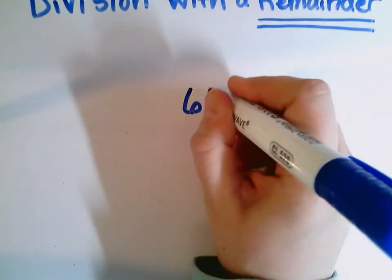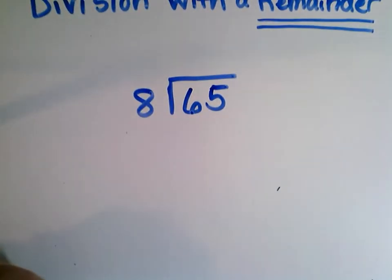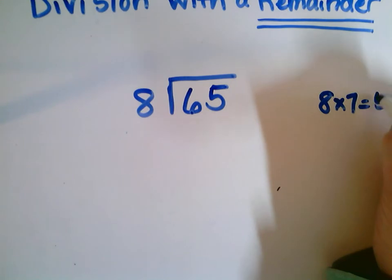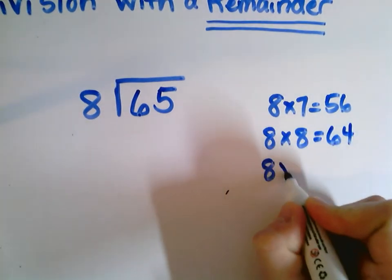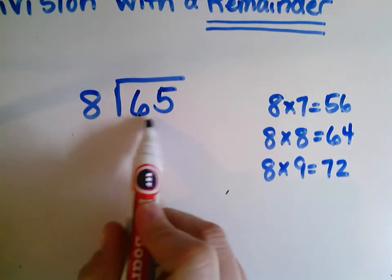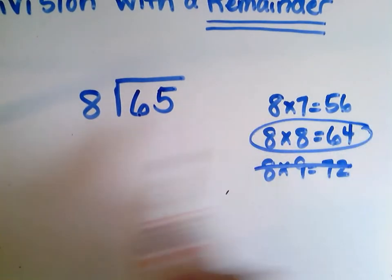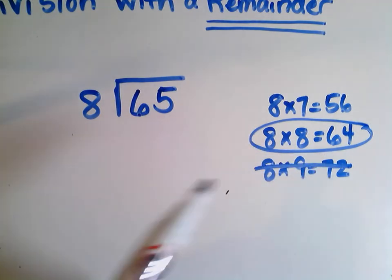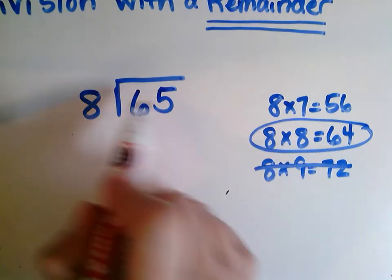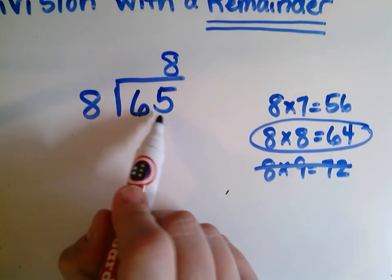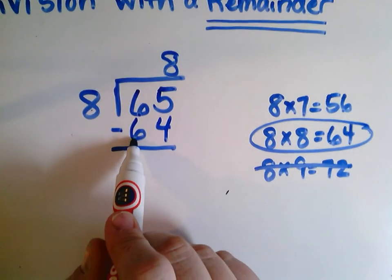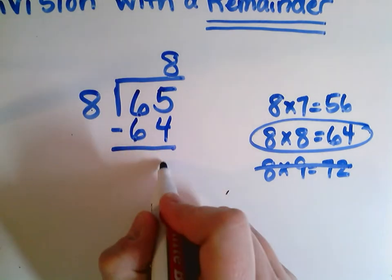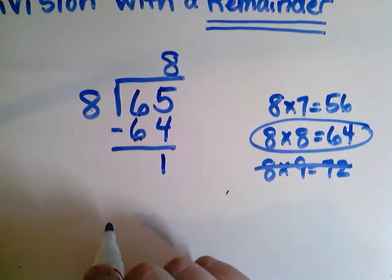Let's do 65 divided by 8. I know there isn't anything times 8 that equals 65. I know 8 times 7 is 56, 8 times 8 is 64, and 8 times 9 is 72. The closest I can get to 65 without going over is 8 times 8 is 64. So I can get 8 groups of 8 out of 65, which gives me 64 altogether. I write 64 underneath 65 and subtract: 5 take away 4 is 1, 6 take away 6 is nothing. So I have 8 remainder 1.